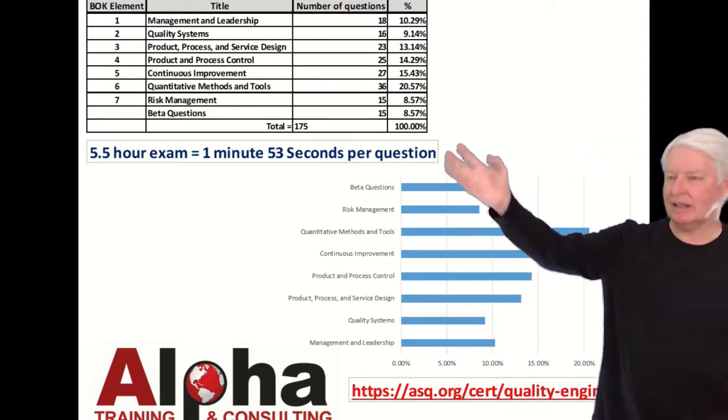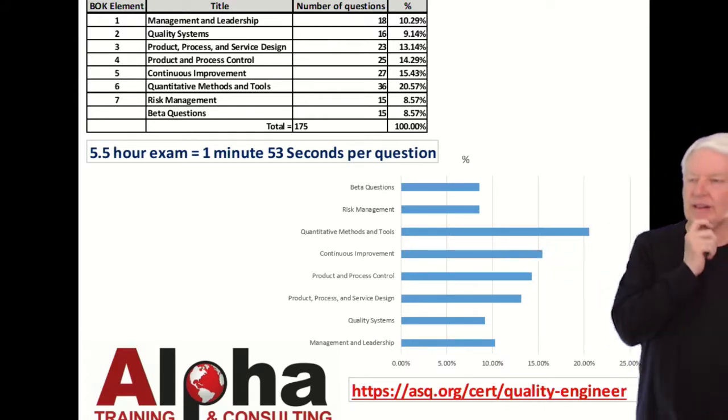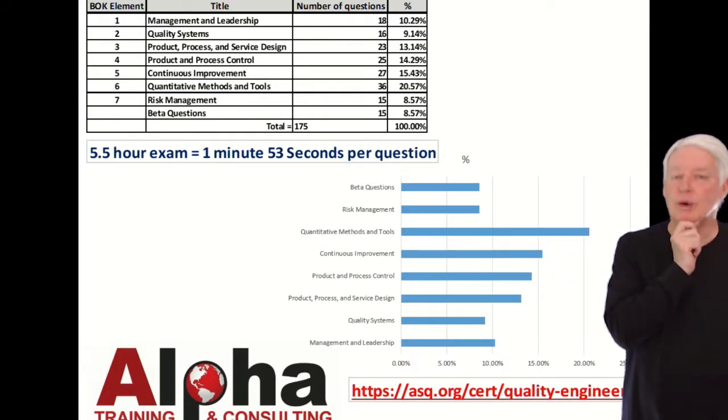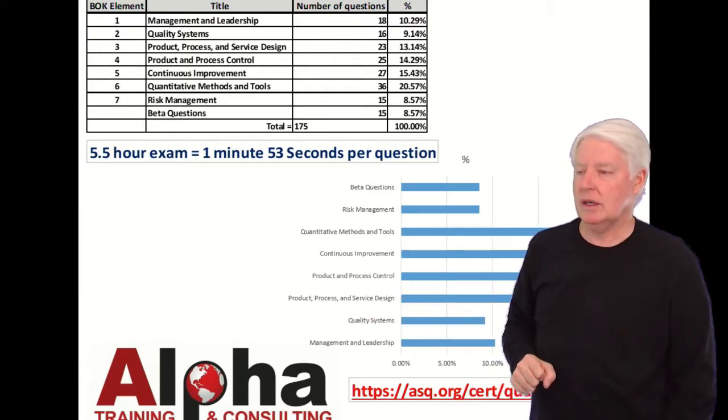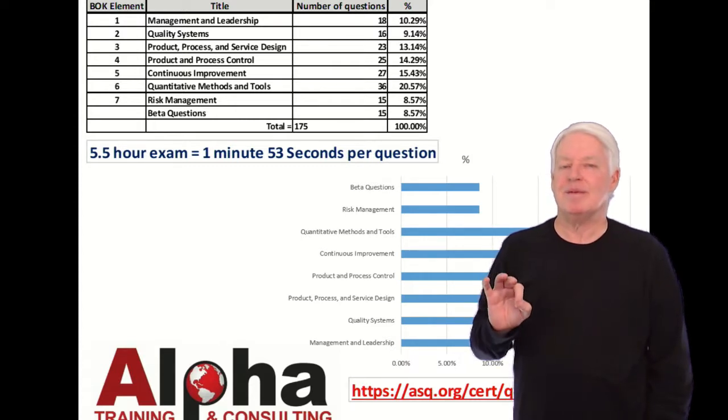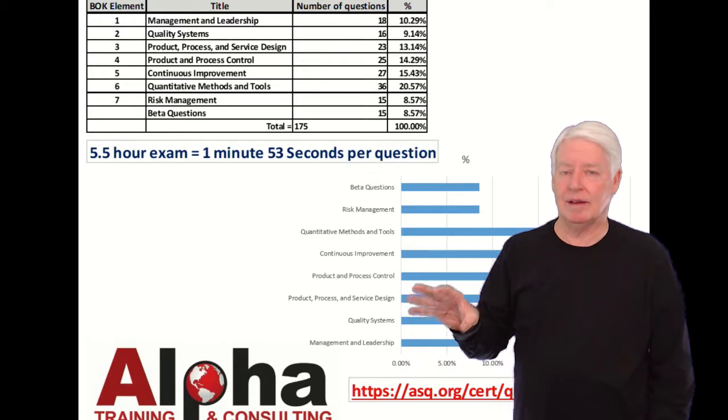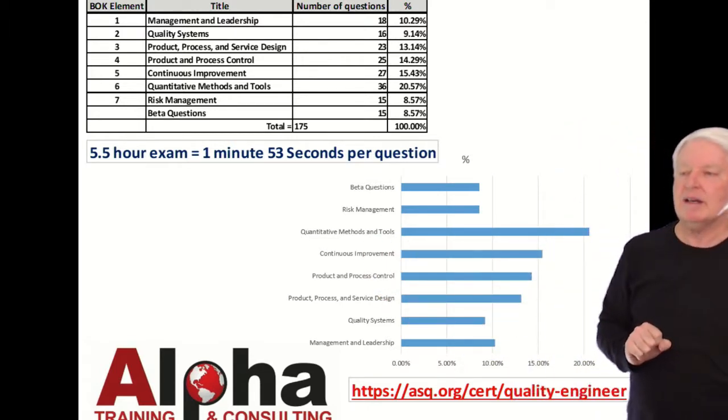I have a bar chart that tells you the same thing as that table. As you can see, they test most heavily on Quantitative Methods and Tools, which means you're going to be tested on a lot of mathematical and statistical tools. That is also the most difficult part of the preparation. It's the reason that most students fail. If you fail the exam, it's highly likely it's going to be because of the Quantitative Methods element.